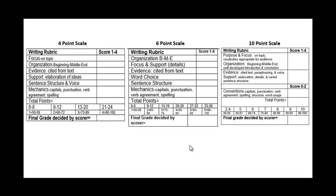These are just examples. You will need to match yours up to not only your point scale, but what's required on your rubric. For this four-point scale, it looks at focus, organization, evidence, support, sentence structure and voice, and mechanics — which is capitals, periods, those types of things. The six-point scale covers organization, focus and support, evidence from text, word choice, sentence structure and mechanics. And then for the ten-point scale — this is actually one used in Florida — it has purpose and focus, evidence and support as a category altogether, and conventions.